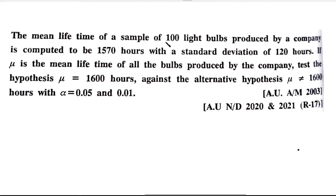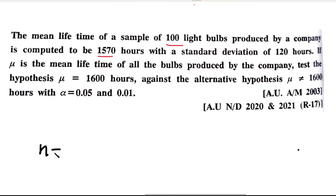The mean lifetime of a sample of 100 light bulbs produced by a company is computed to be 1570 hours. We will check the average lifetime of the light bulbs produced by this company. The sample size n is 100, and the sample mean x-bar is 1570 hours.